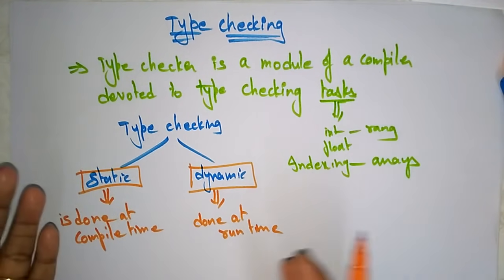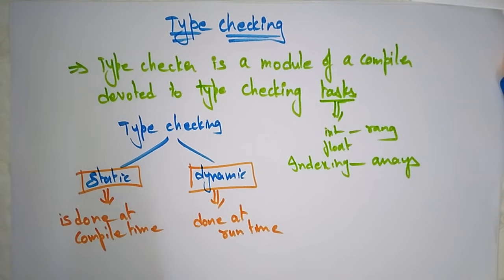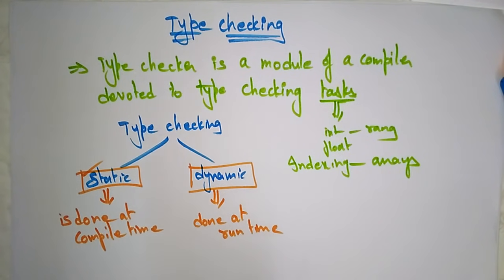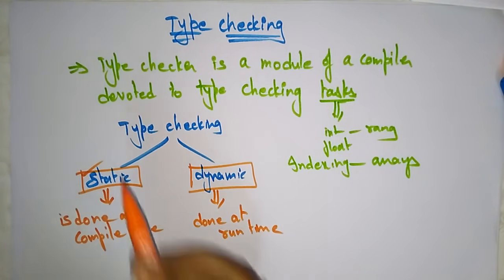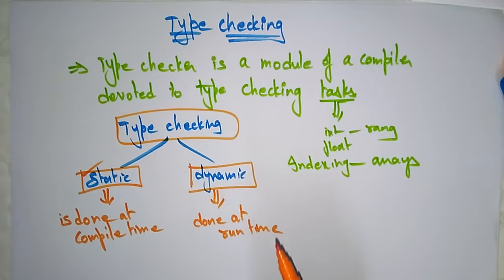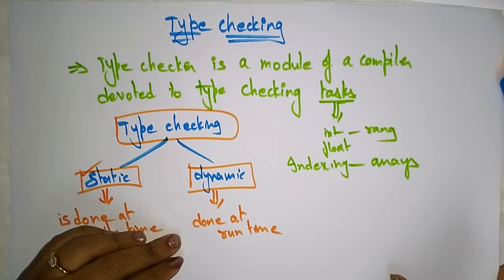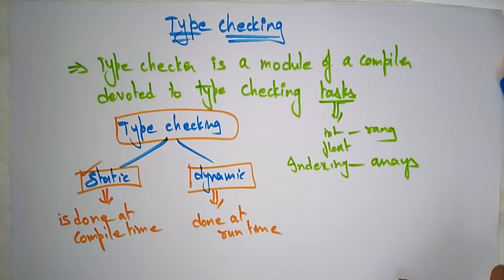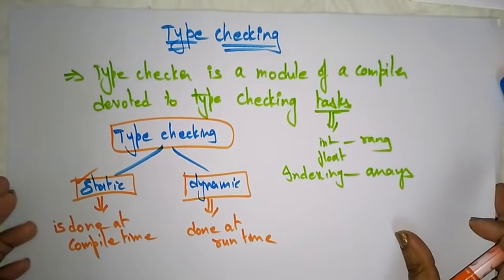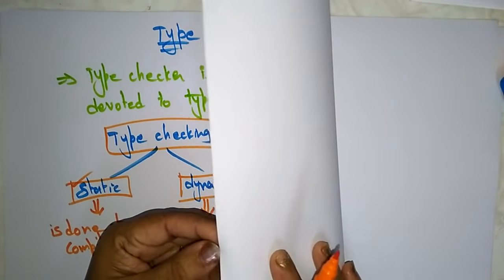For languages like Pascal and C, type checking is primarily static. In those languages, type checking is done at the static stage and is used to check the correctness of the program before its execution. Static type checking is also useful to determine the amount of memory needed to store the variables. Now let's see how to design the type checker.